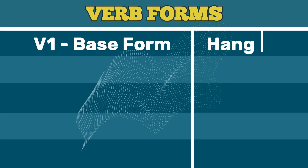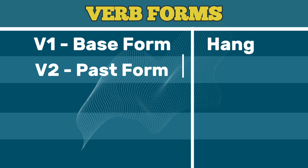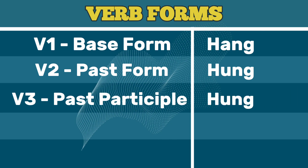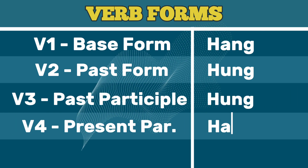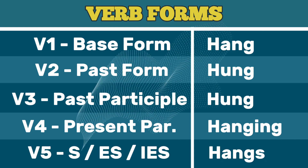V1 base form: hang. V2 past form: hung. V3 past participle: hung. V4 present participle: hanging. V5 third person singular simple present: hangs.